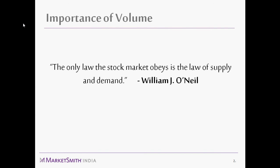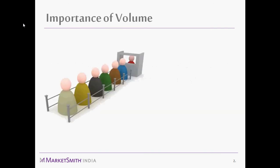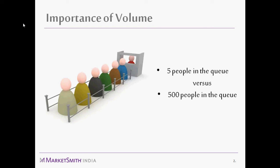Let me give you a relatable analogy. Say you're a vegetable seller and there are people queuing up to buy. How would you price your vegetable if you saw 50 people in the queue versus 500 people? Obviously if there are 500 people you're going to increase the price because there is huge demand. This is exactly what volume for a stock tells you — it tells you how many people are in the queue for buying or selling that stock.